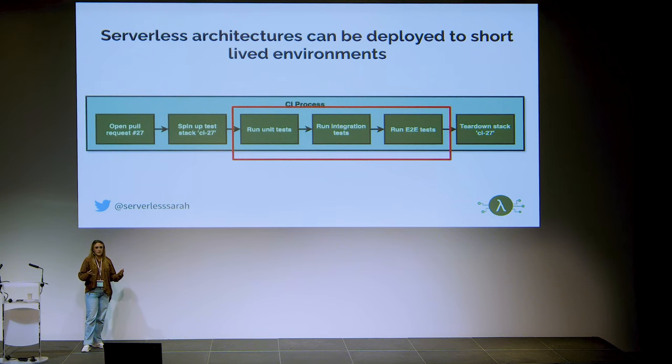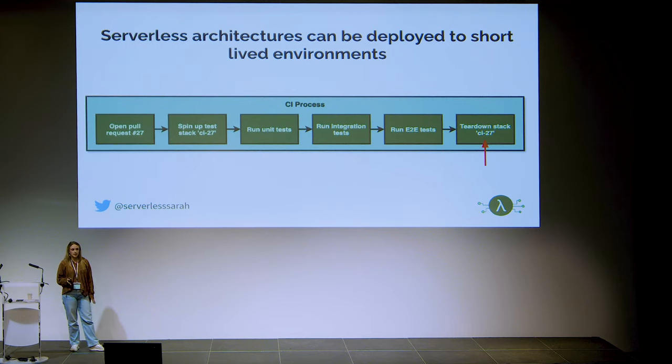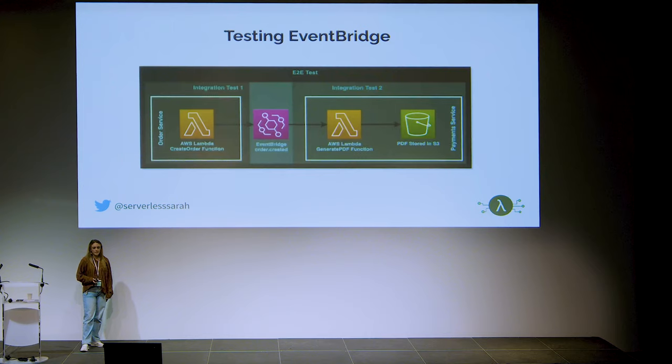We give the stack a unique name — CI-27 is the example here, named after the ticket number we're working on — so it doesn't override someone else's CloudFormation stack. Once deployed, we effectively have a copy of the production site with all resources spun up in AWS. We then run unit tests, followed by integration tests, followed by end-to-end tests. At the end we tear down the stack in CloudFormation, deleting all the resources. There's a maximum of 500 stacks you can have open in CloudFormation, and you're paying for resources if you don't tear it down — so it's really cheap to do this.